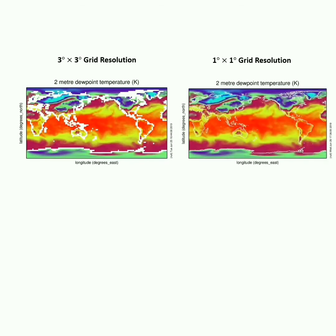Now visualize both the 3-degree by 3-degree resolution and the 1-degree by 1-degree resolution outputs using any visualization software. Just observe the spatial resolution difference — here you can clearly see the difference between the coarser and the finer grid resolutions.